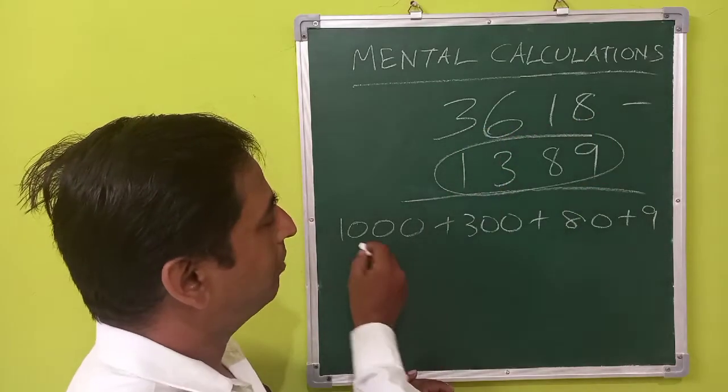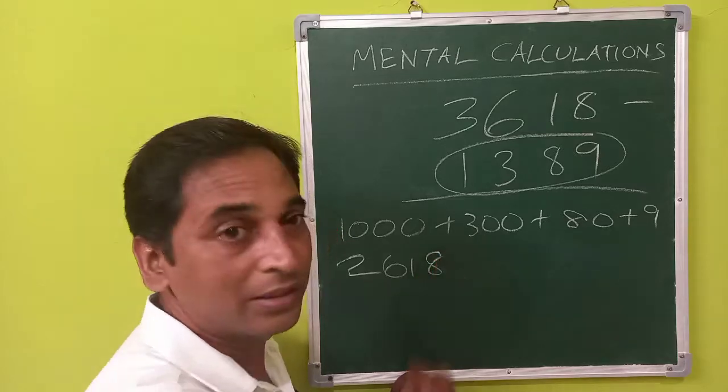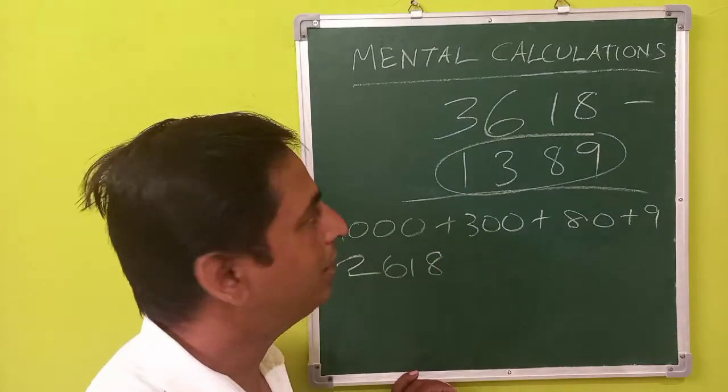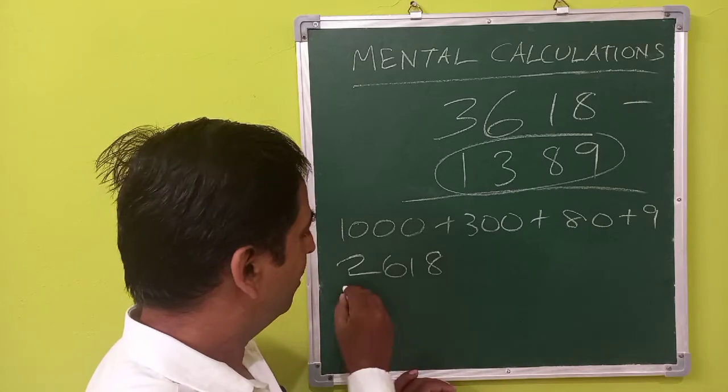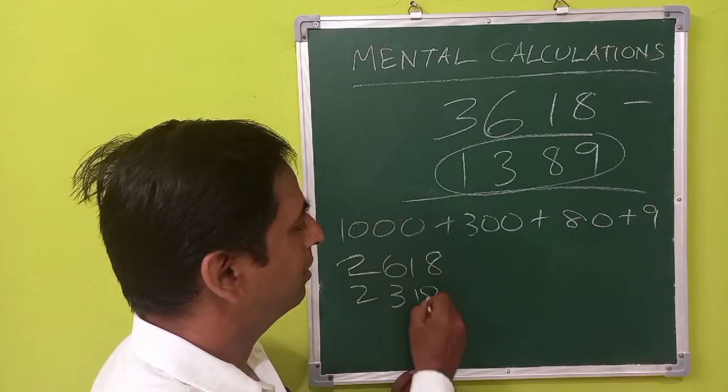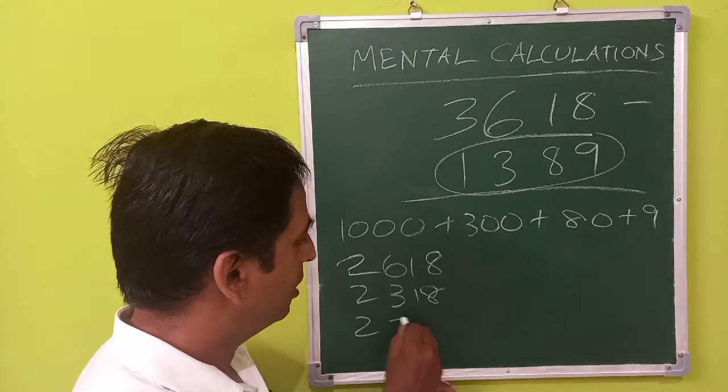So 3618 minus 1000 will be 2618. That can be calculated easily. Then you can subtract this 300, so that will become 2318. Then you subtract this 80 from that, that will become 2238.